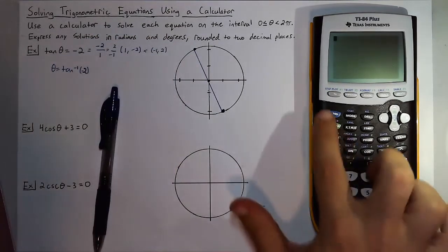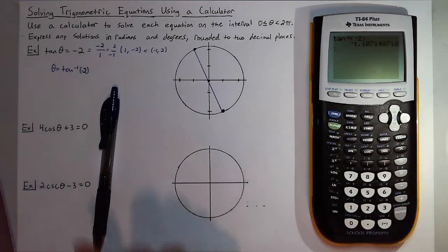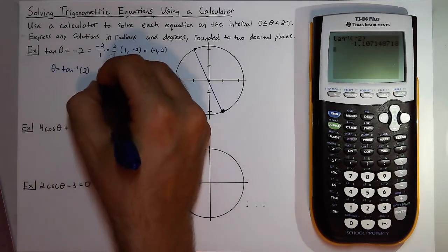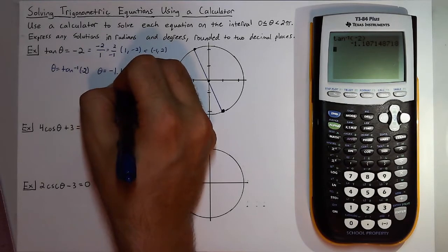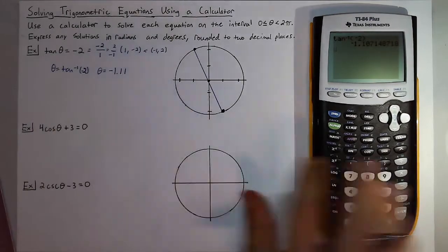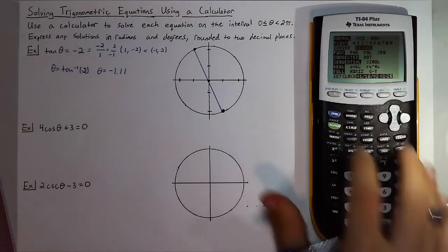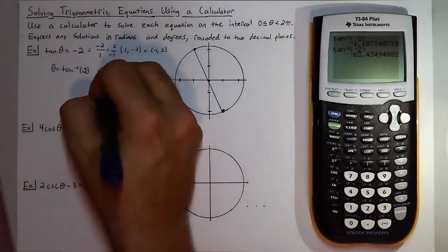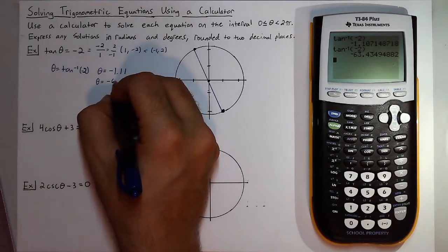So tangent inverse of negative two, and when I plug this in I will get theta is equal to negative one point one one if I'm using two decimal places, and if I put that into degree mode and plug the same exact thing in I can get negative sixty three point four three.